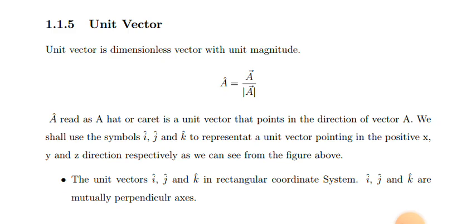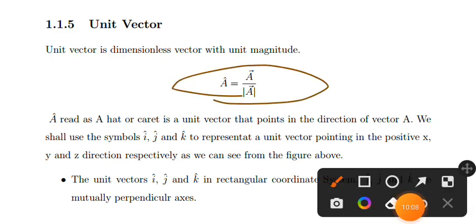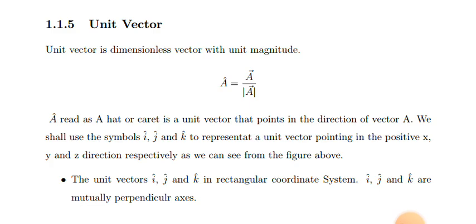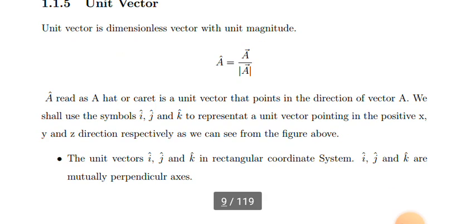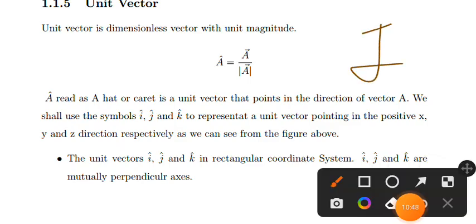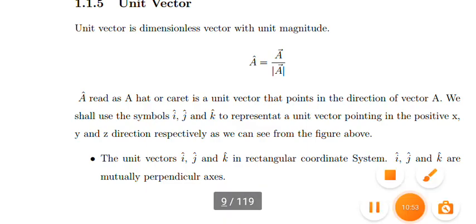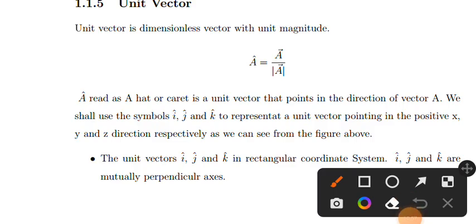A unit vector is dimensionless. It has only direction and magnitude of one. The unit vector provides direction without dimension. We denote a unit vector with a hat or caret symbol, like A hat.